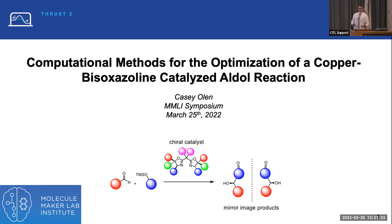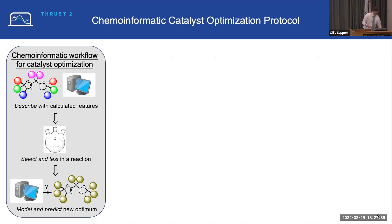I'll give a very high-level overview of how our workflow works in practice and then show how this works for the system that I work with. I'm interested in these bisoxazoline ligands, which we want to describe with calculated chemical features that capture the subtle 3D nuance that affects enantioselectivity in reactions. We also want to do this quickly, because there are many points of combinatorial diversity in libraries like this, and we want to be able to process many different structures. From there, we algorithmically select a subset of these catalysts, synthesize them, and test them in a reaction, with the ultimate goal of modeling enantioselectivity as a regression and predicting new optimal catalysts.